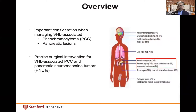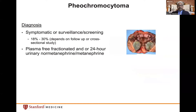As many of you know, pheochromocytomas and pancreatic lesions are quite common in patients with VHL. Pheochromocytomas in most patients with VHL are diagnosed on surveillance or screening, though patients can present with symptoms and may be the first family member diagnosed. Depending on the study type, the prevalence of pheochromocytoma in patients with VHL is anywhere from 18 to 30 percent, higher in natural history studies.